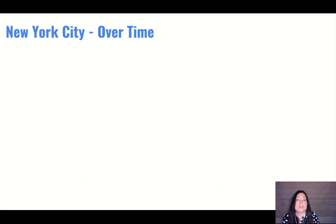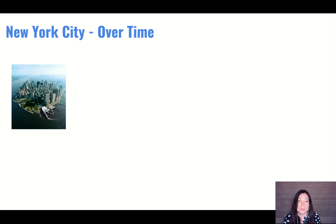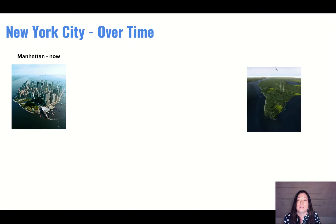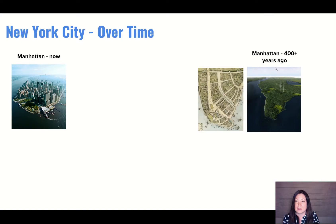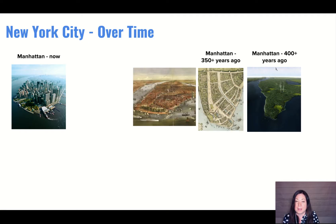So let's review all of this on our timeline. Here's Manhattan now with all its big tall buildings. And remember, here is Manhattan 400 and more years ago. Then we had the town of New Amsterdam, 350 years ago. Right now it's New York. About 150 years ago, starting to get more people. You can see here there are some tall ships, smaller boats, and not too many boats back in the early days — maybe some canoes.